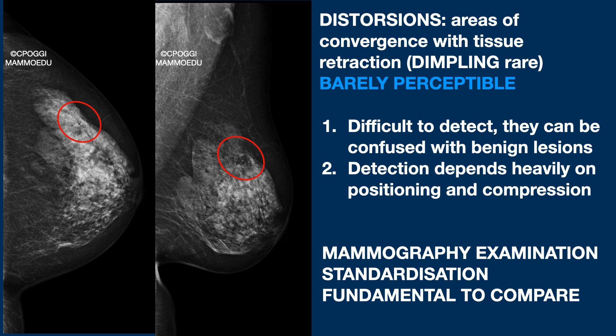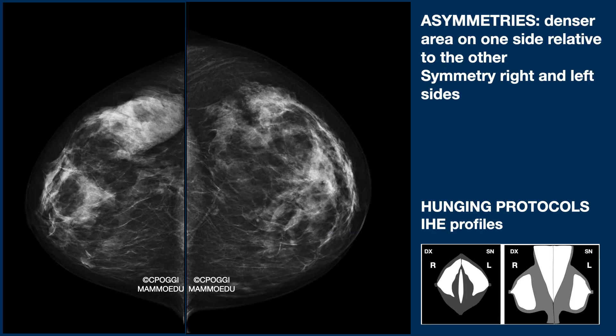It makes it more feasible to compare examinations performed on the same patient but by different operators. Asymmetries are easier to detect, especially if the area of asymmetry is large. It is extremely important for the radiographer to check with the mirror layout, because in this way they can assess whether the documented tissue is equal and sufficient on both sides.